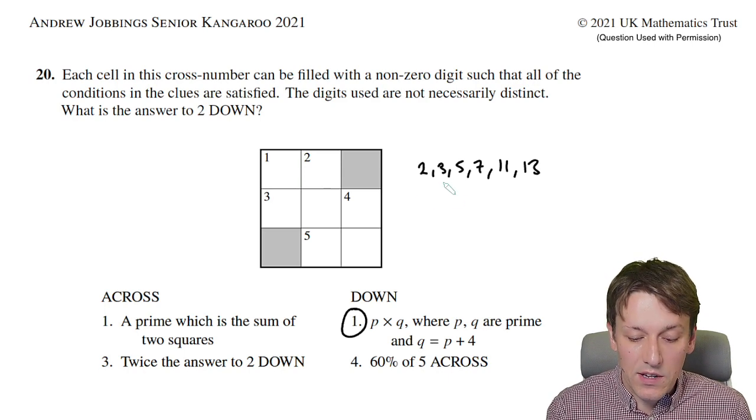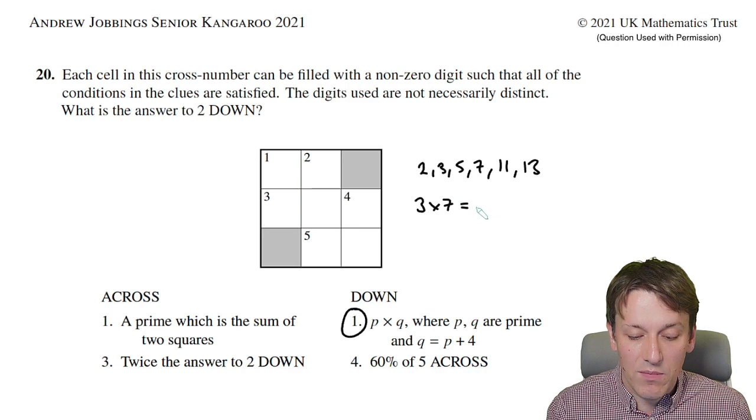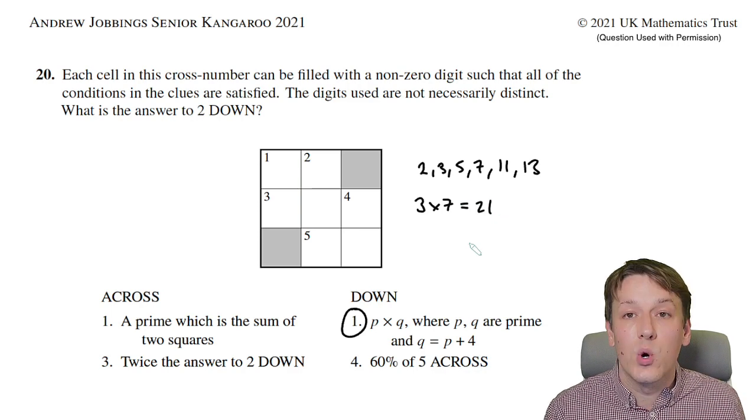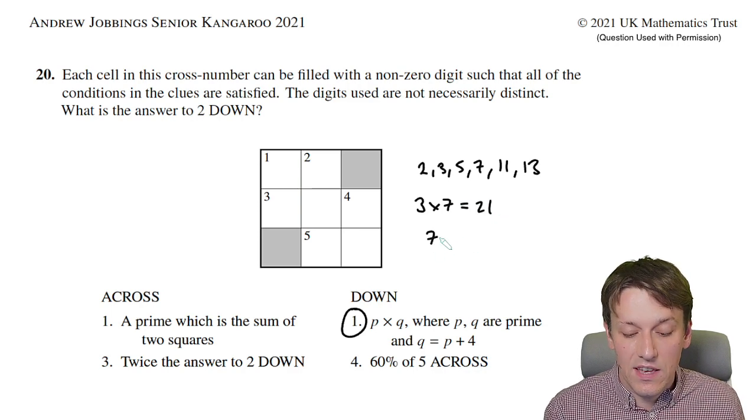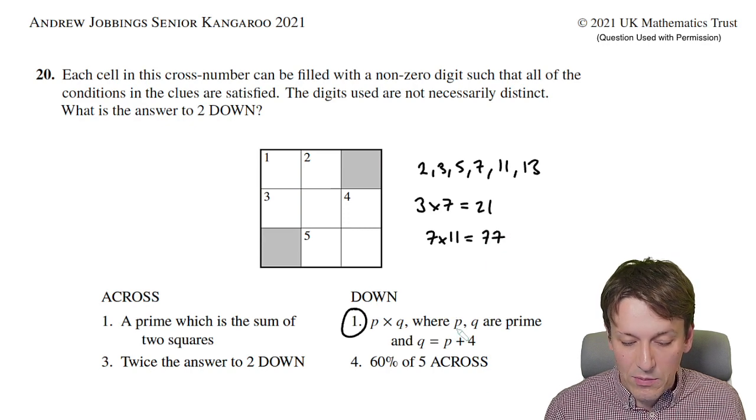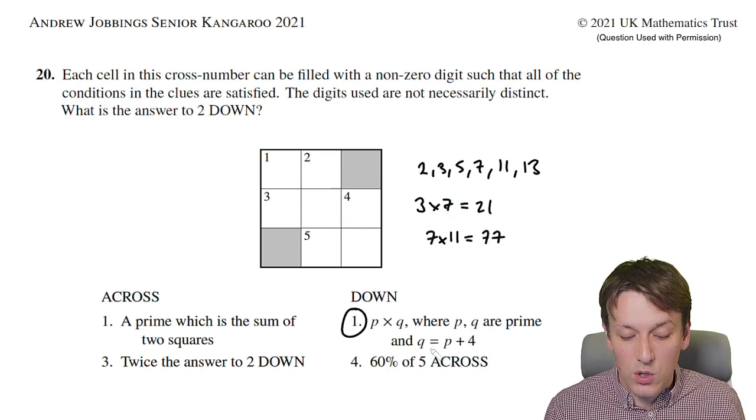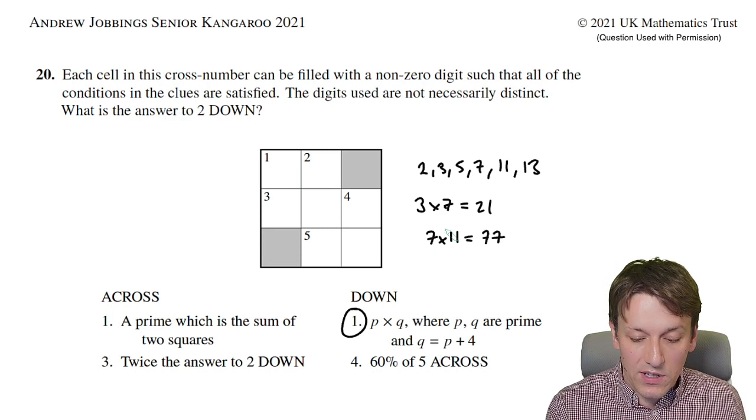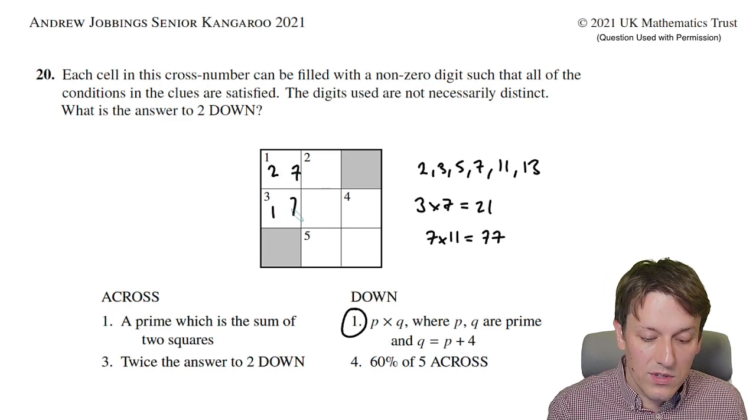To have two numbers that are four apart, I could either have 3 and 7, which gives 3 times 7 is 21, or I could have 7 and 11. Seven times 11 is 77, so those would be our values of p and q, and one down would be the product—either 21 or 77.